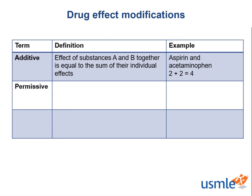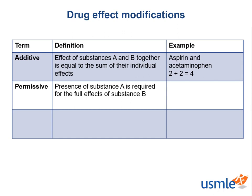Next, we have the term permissive, which is defined as when the presence of substance A is required for the full effects of substance B, such as cortisol on catecholamine responsiveness.